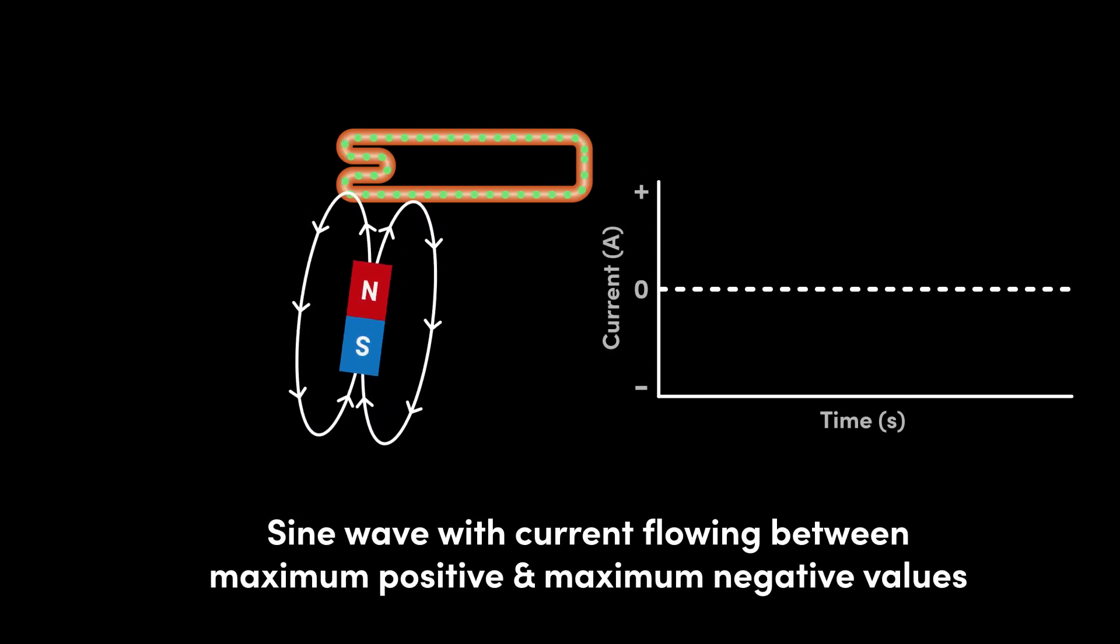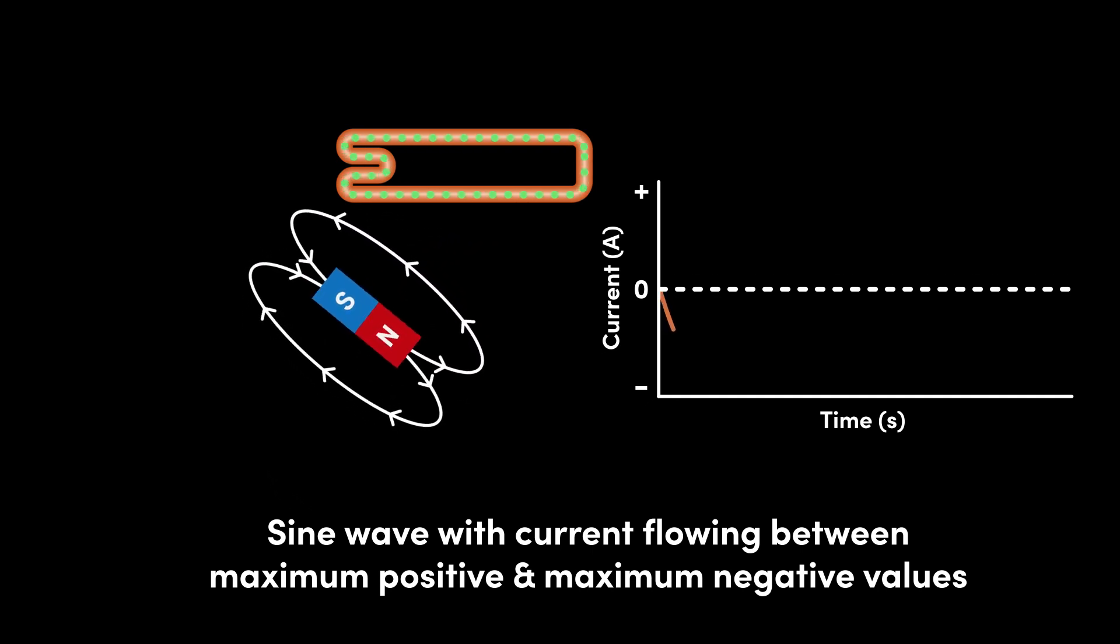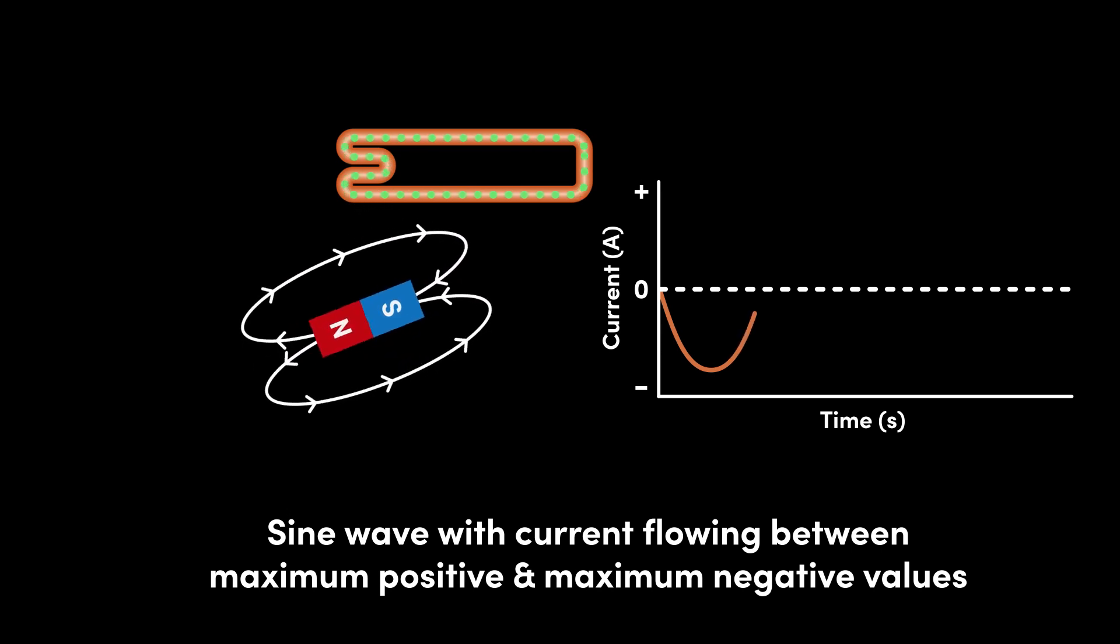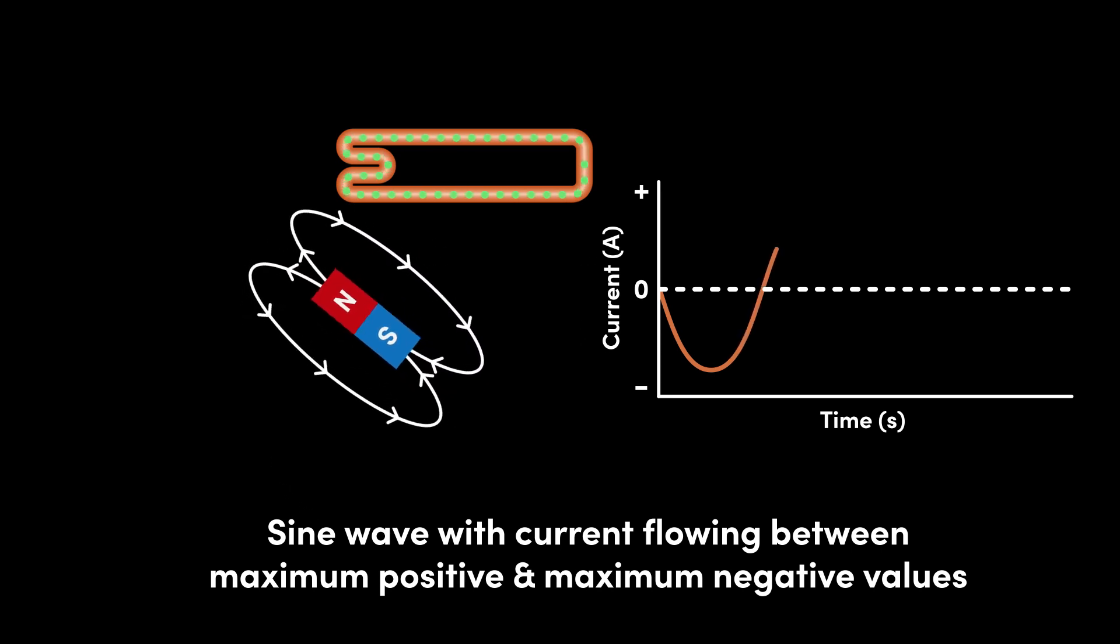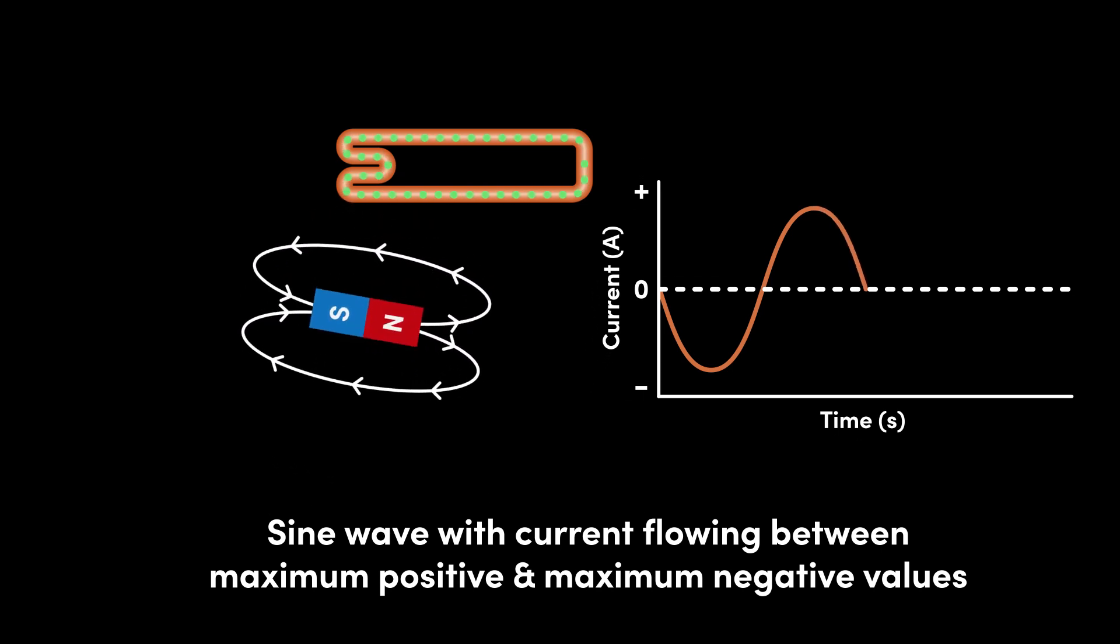If we plot current from the coil on a chart, we see a sine wave with current flowing from zero to a maximum positive value, corresponding to the north pole approaching the coil, back to and through zero to a maximum negative value, corresponding to the south pole approaching the coil, and then back to zero.